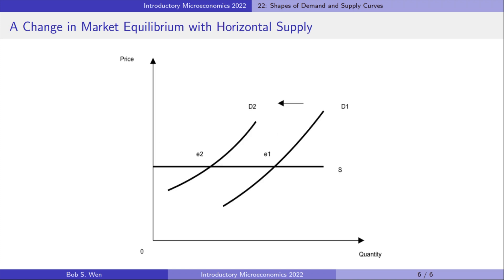Now we consider the case where the supply curve is horizontal. Using the supply and demand diagram, we find that the shifts of the demand curve only change the equilibrium quantity, but the equilibrium price is unchanged.